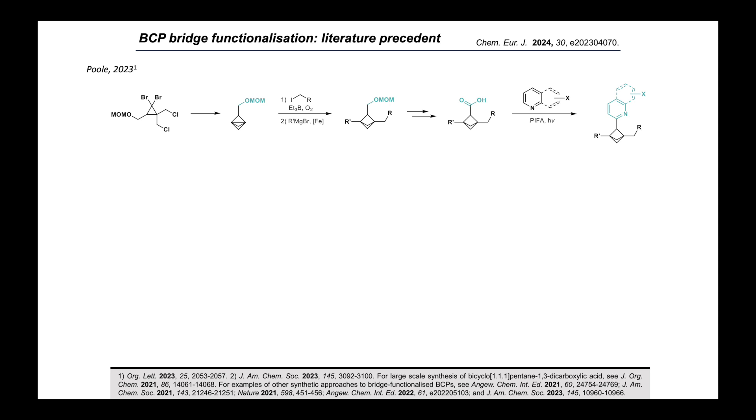Earlier this year, our group at GSK and the University of Strathclyde showed the divergent introduction of nitrogen heterocycles onto the BCP bridge positions. Again, starting from Schlüter's propellane, we were able to access several 1,2,3-trifunctionalized BCPs, each bearing a carboxylic acid handle at the bridge position. We were then able to use this handle to a radical precursor group by treatment with hypervalent iodine oxidants under blue light irradiation. The resulting BCP radicals were then trapped by free nitrogen heterocycles in a Minisci-type process to give the heteroarylated BCP products.